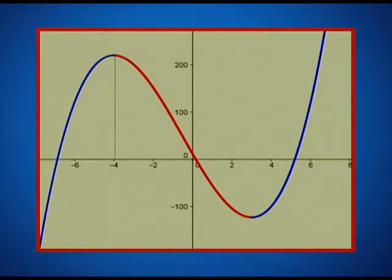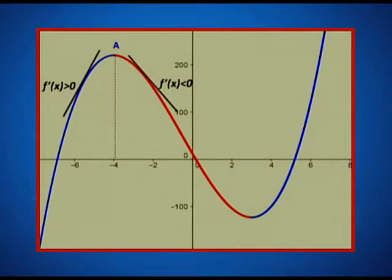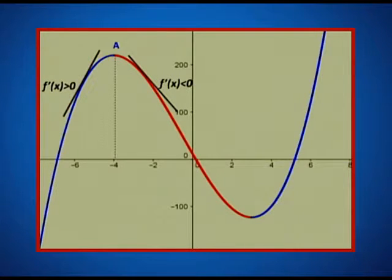Before looking at that third possibility, let us revisit what we have just done in a different way. Here at x equal to minus 4, the function is taking a maximum value. What we observed was that around point A, the derivative is behaving in a certain special manner. On the left-hand side of A — that is, at points closer to minus 4 but less than minus 4 — the slope of the tangent was positive; that is, the derivative at those points was greater than 0.